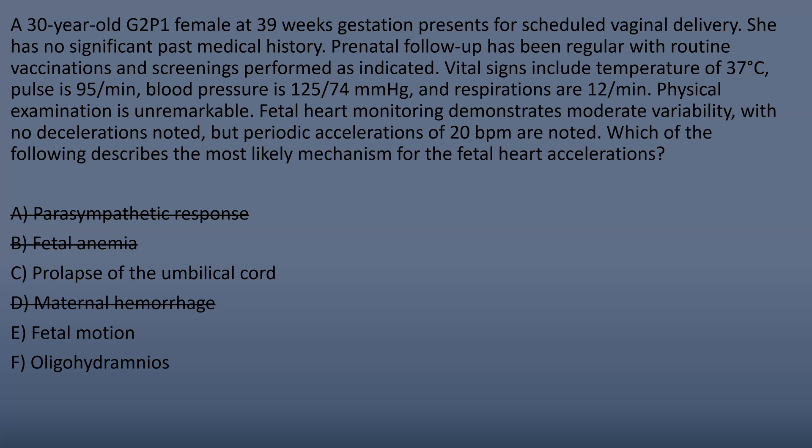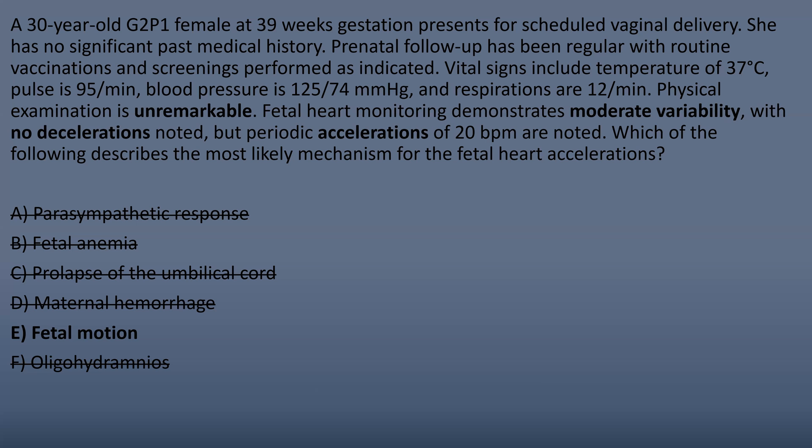Next, prolapse of the umbilical cord — the cord can prolapse temporarily and cause variable decelerations. Oligohydramnios, which is decreased total amniotic fluid, causes similar compression of the umbilical cord. Both of those would lead to variable decelerations. So we're left with fetal motion in this case.